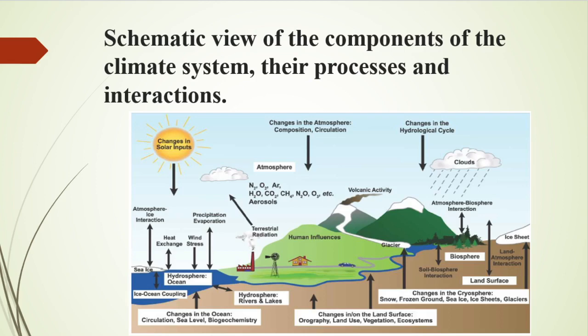Over the long term, the amount of incoming solar radiation absorbed by the earth and atmosphere is balanced by the earth and atmosphere releasing the same amount of outgoing long-wave radiation. About half of the incoming solar radiation is absorbed by the earth's surface. This energy is transferred to the atmosphere by warming the air in contact with the surface, by long-wave radiation absorbed by clouds and greenhouse gases. The atmosphere in turn radiates long-wave energy back to earth as well as out to space.